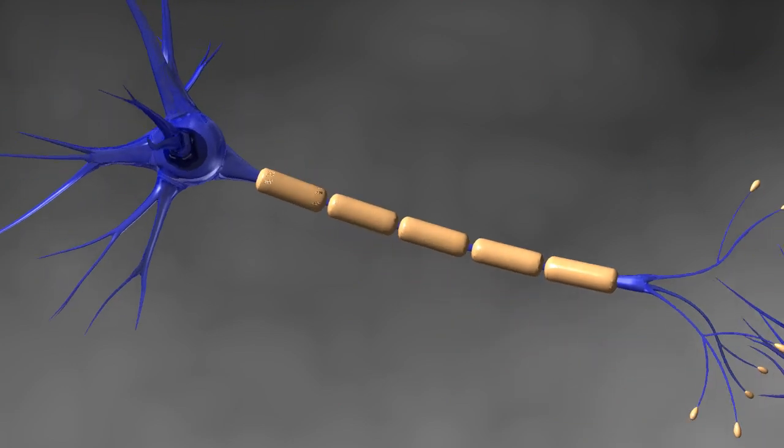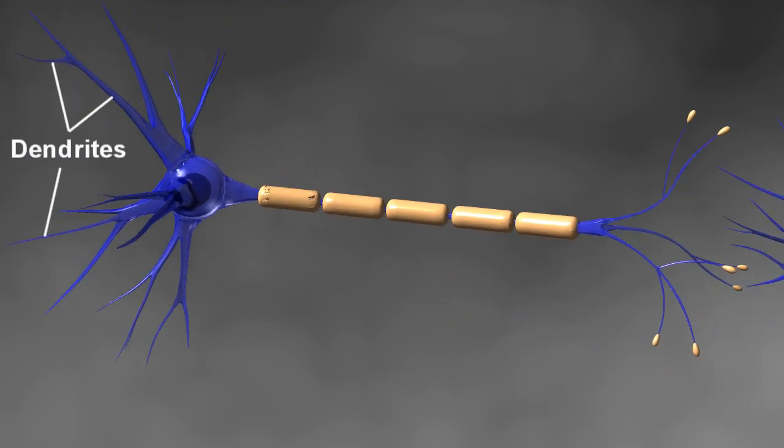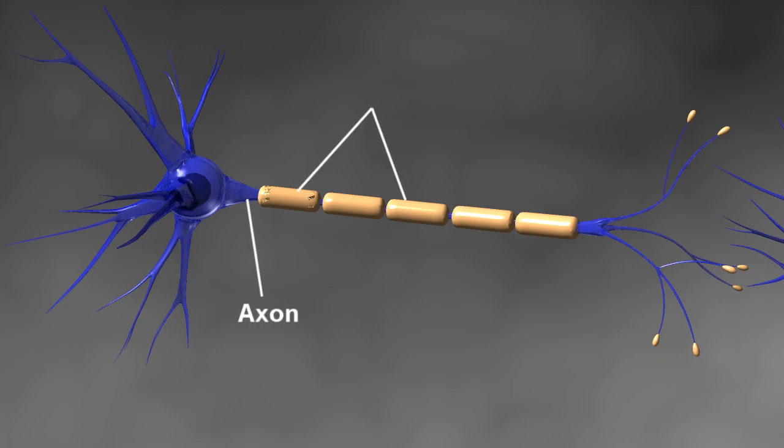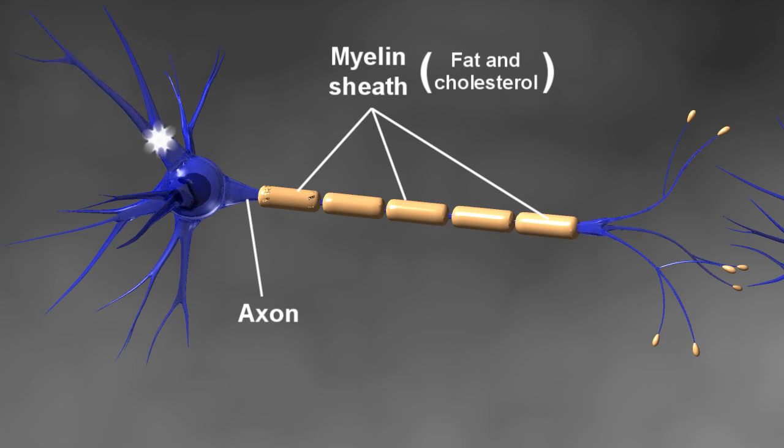The fine tendrils emanating from the cell body are the dendrites, and the main extension off the base of the neuron is called the axon, which is covered by a series of sausage-shaped electrical insulators called the myelin sheath. The myelin sheath is predominantly fat and cholesterol and is necessary for normal electrical conduction up and down the axon.